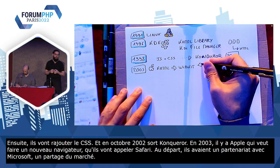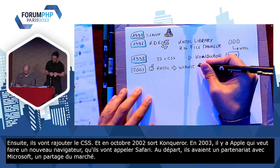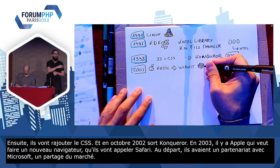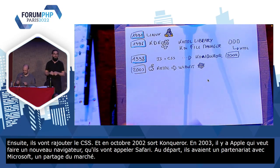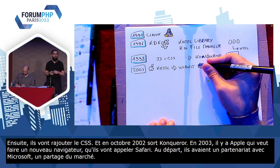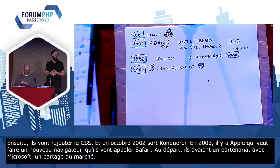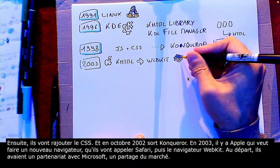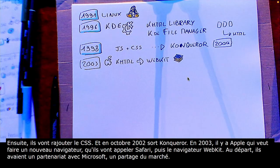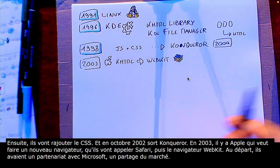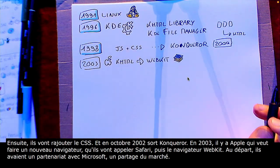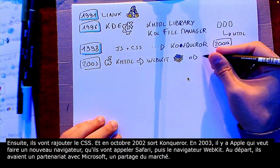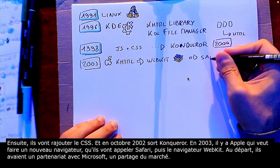Comme Microsoft sont super sympas, c'est en 2001 qu'ils ont décidé que tous les développeurs d'Internet Explorer pour Mac, on allait les passer sur Internet Explorer pour Windows. Donc la version Mac elle est buguée, elle n'avance pas. Apple a un petit peu les nerfs, donc voilà, il faut un nouveau navigateur, ils le créent eux-mêmes précisément au moment de la fin de l'accord, donc 2002-2003.